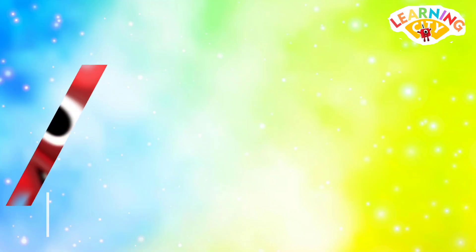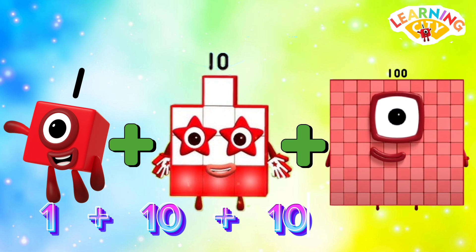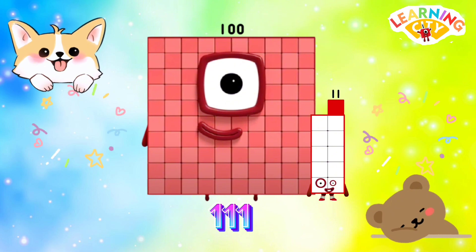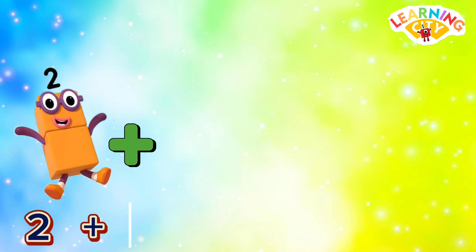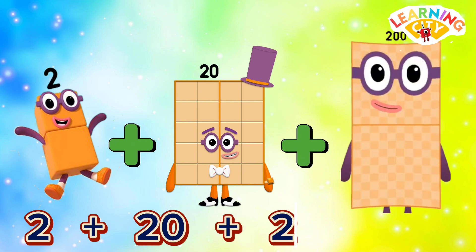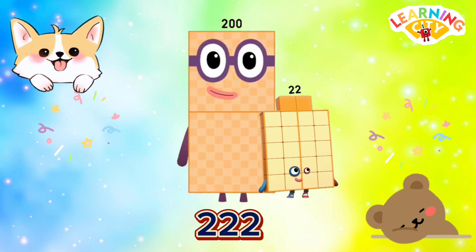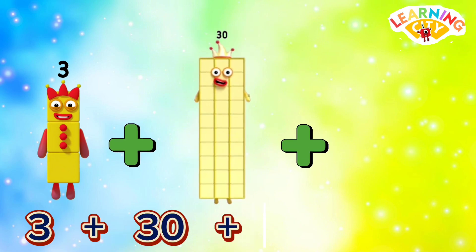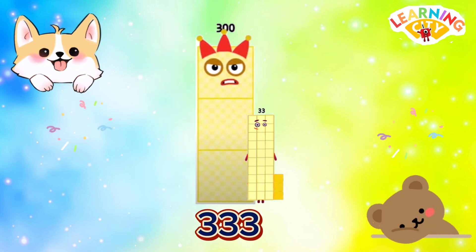Let's learn addition with number blocks. 1 plus 10 plus 100 is equals to 111. 2 plus 20 plus 200 is equals to 222. 3 plus 30 plus 300 is equals to 333.